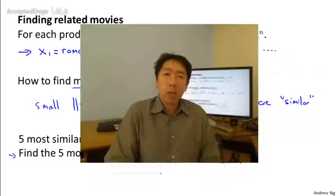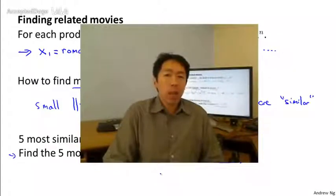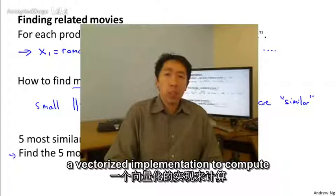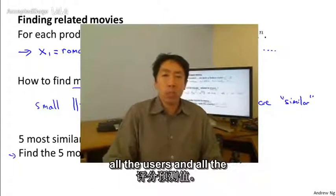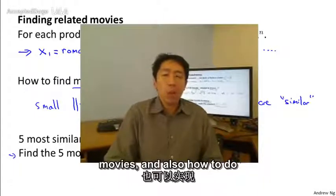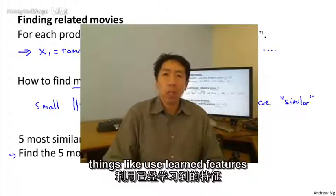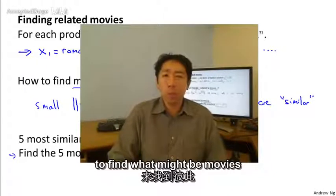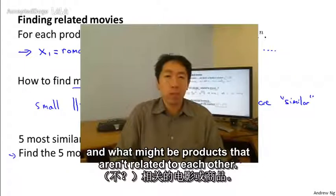So with that, hopefully you now know how to use a vectorized implementation to compute all the predicted ratings of all the users on all the movies and also how to do things like use learned features to find what might be movies or what might be products that are related to each other.